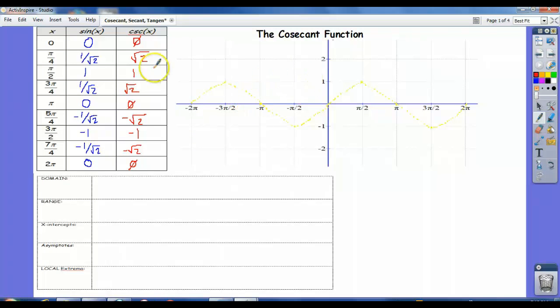So I'm just taking the reciprocal of all these values. Okay, so now let's plot them. Well, when x is 0, cosecant is undefined. Well, what does that mean? In terms of the graph, it means that we have a vertical asymptote.